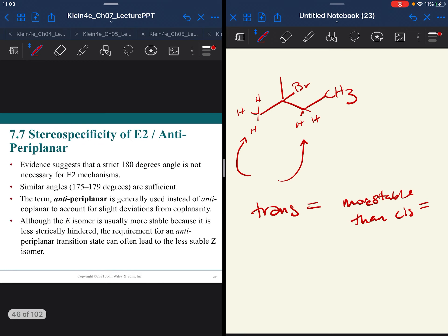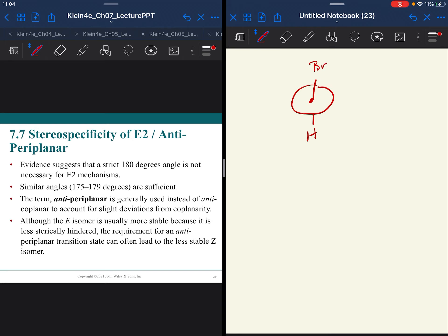So we're not going to worry about rotating and coplanar relationships except for in rings. I do want to discuss that the E2 mechanism is called anti-periplanar. It may also be called anti-coplanar. And what does that mean?